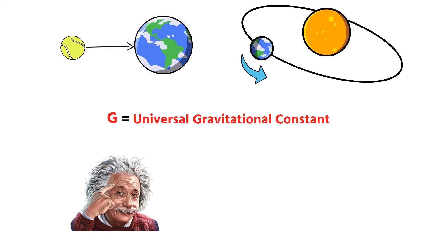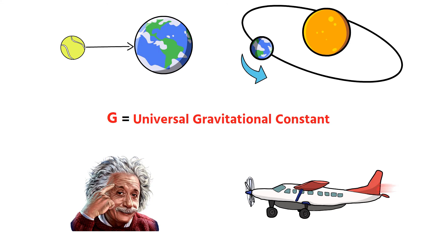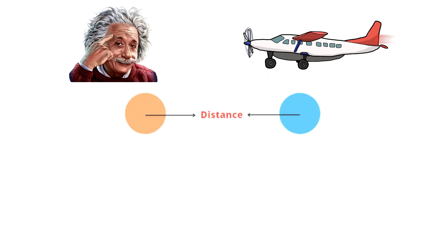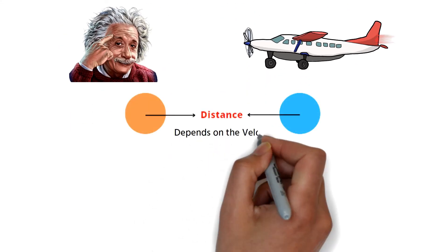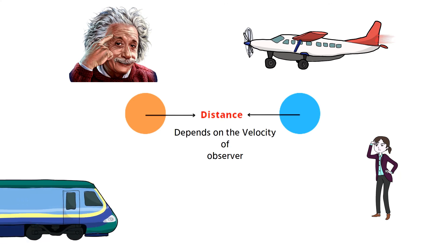However, according to Einstein's theory of relativity, the mass of an object depends on its velocity. The distance between two objects also depends on the velocity of the observer, that is, the distance between two objects measured by a stationary observer will not be the same as that measured by a moving observer.